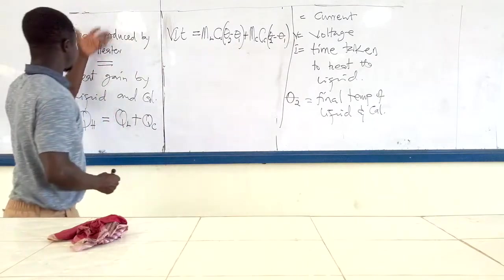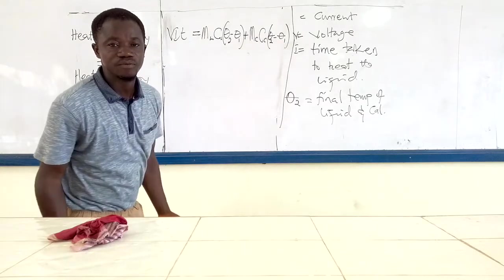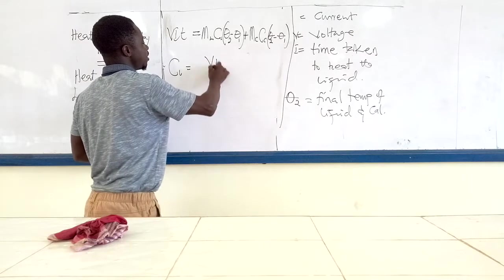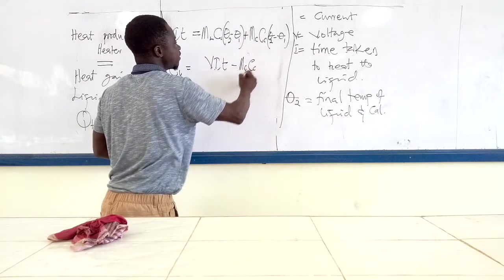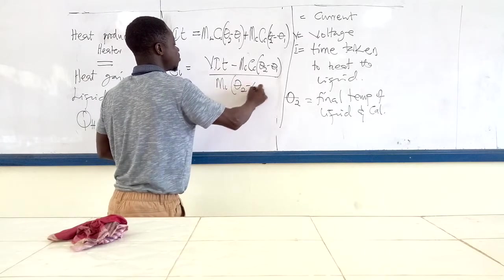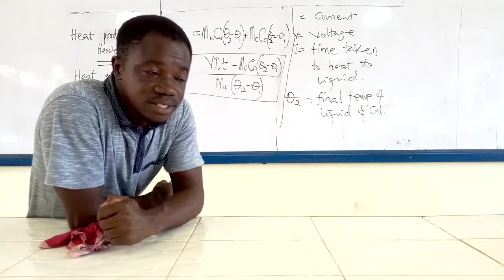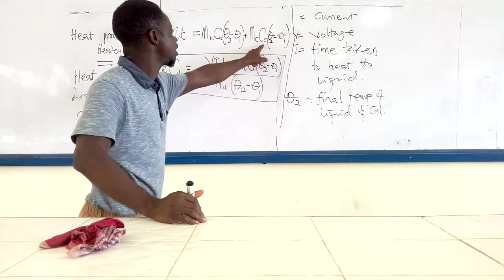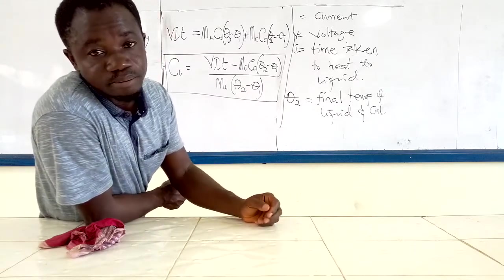This is the formula from our theory. We are looking for CL, the specific heat capacity of the liquid, so we make CL the subject. CL = [VIT − MC × CC × (theta2 − theta1)] divided by [ML × (theta2 − theta1)]. With this relation we are able to calculate the specific heat capacity of the liquid. As for the specific heat capacity of the calorimeter CC, we already know it — it is a standard calorimeter and its specific heat capacity is written on it.